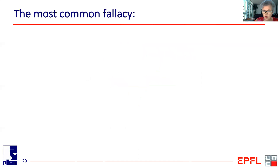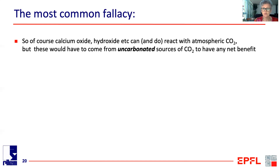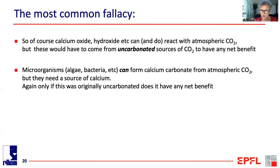The most common fallacy, which is behind many startups, is to say we can solve the problem of atmospheric CO2 by letting it react with calcium oxide or calcium hydroxide. Of course that will happen, but the problem is: where do you get that calcium oxide or hydroxide from in the first place? If it came from calcium carbonate, you don't have any net benefit. Similarly, many microorganisms or bacteria can form calcium carbonate from atmospheric CO2, but they also need calcium oxide — and only if that calcium was originally uncarbonated does it have any net benefit.